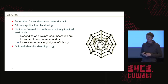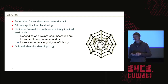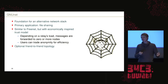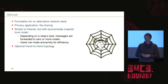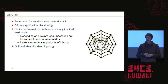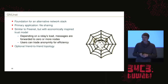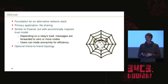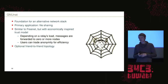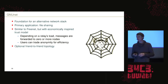GnuNet is very similar to Freenet, but GnuNet also has a foundation which intends to develop an alternative network stack with a hop-by-hop architecture topology. The primary application of GnuNet is also file storage and file sharing. It's similar to Freenet but has an economically inspired trust model, and there is also the friend-to-friend option where you only trust the friends you already know.